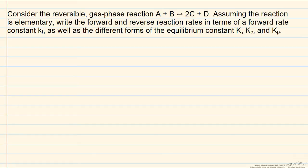We want to be able to write the rate of the forward and reverse reactions so that we can get the net rate of the reaction. This reaction is elementary, so it follows elementary kinetics, which means that we can write the reaction rate for both the forward and the reverse process based on the stoichiometry of the reactants and products.